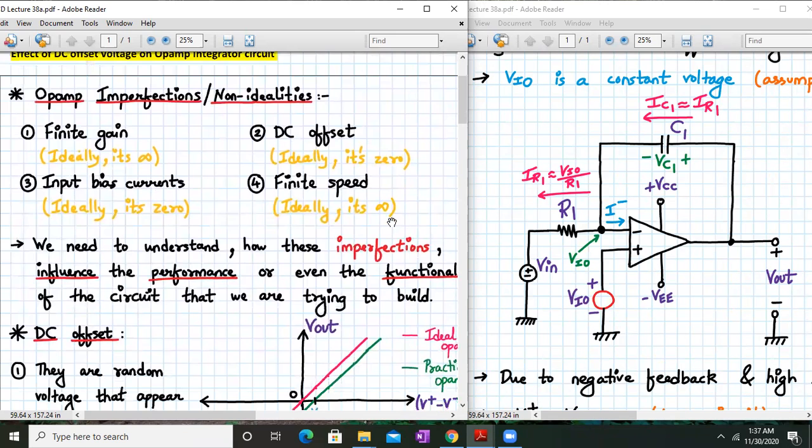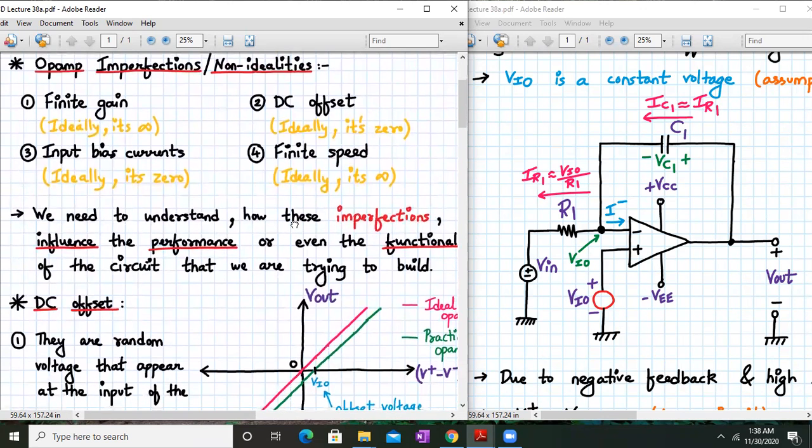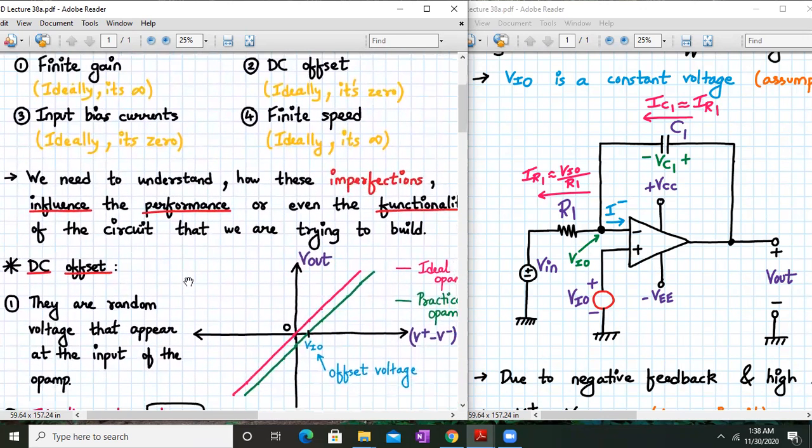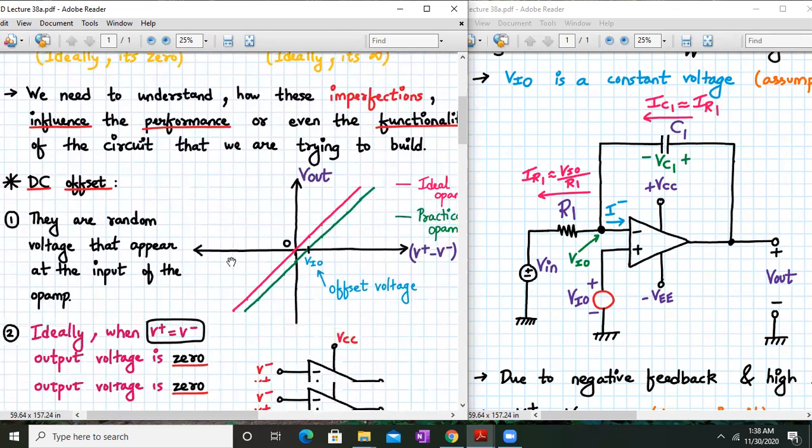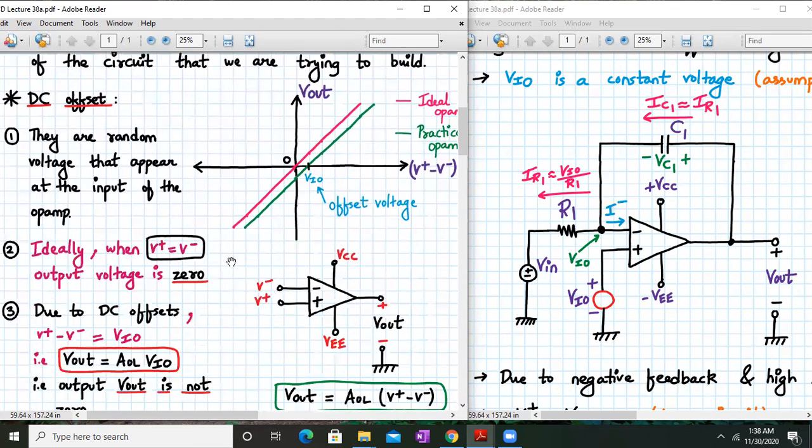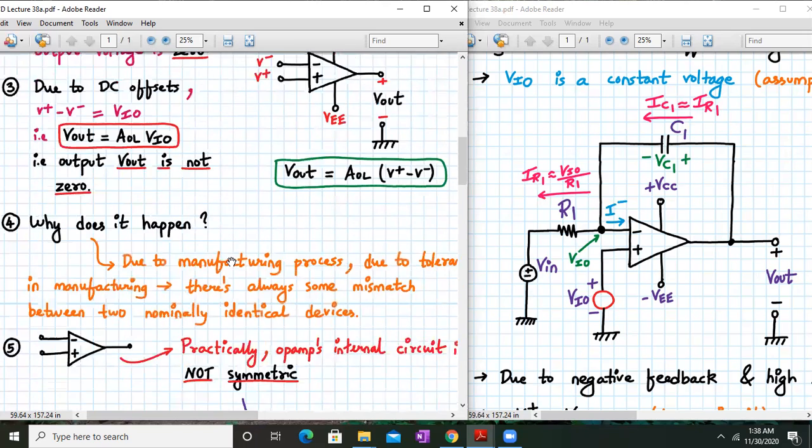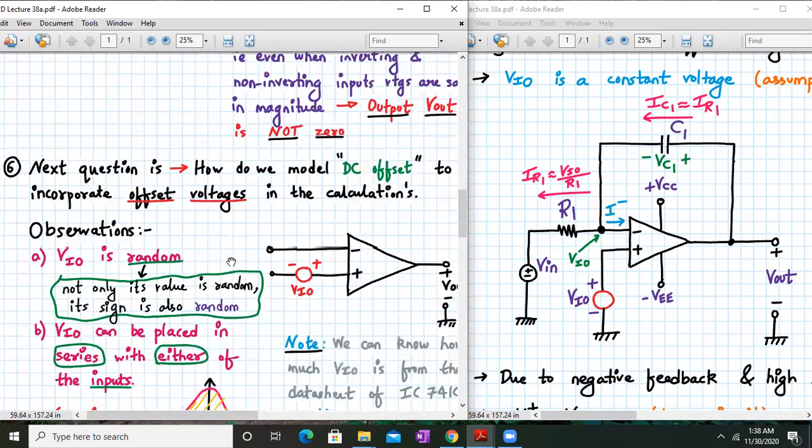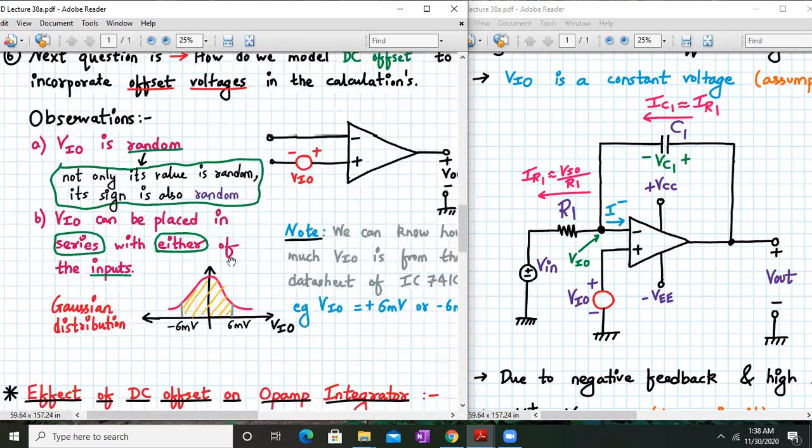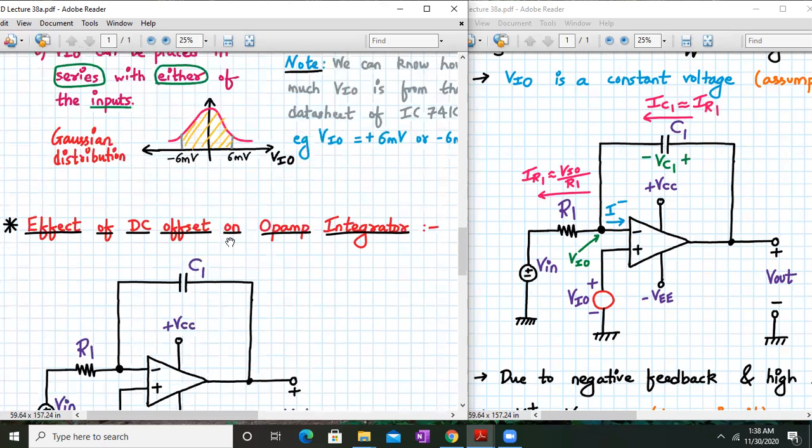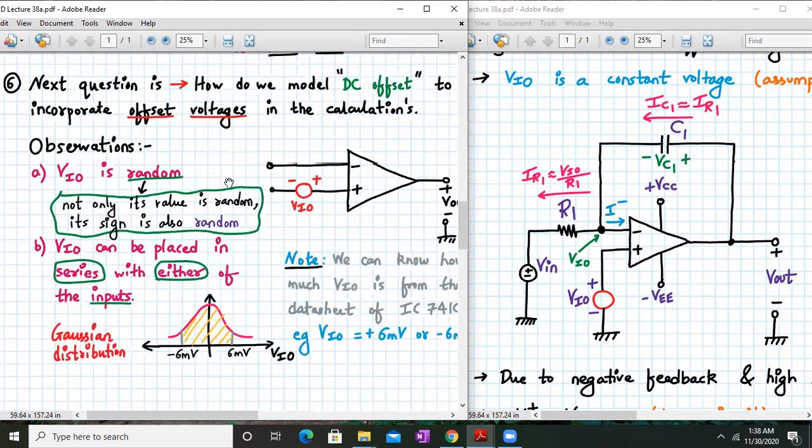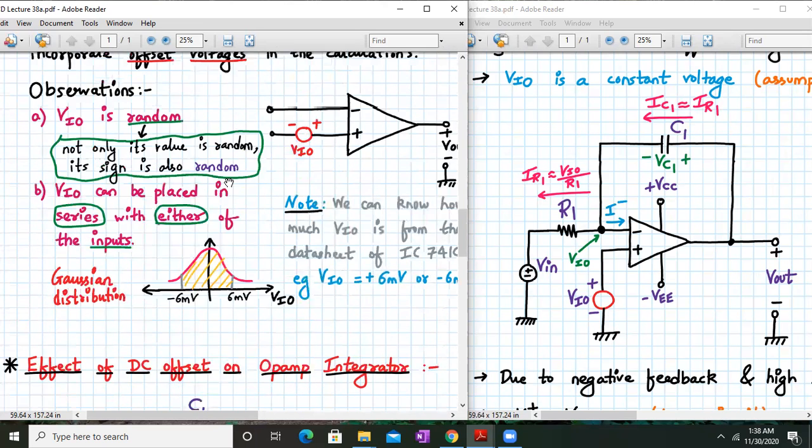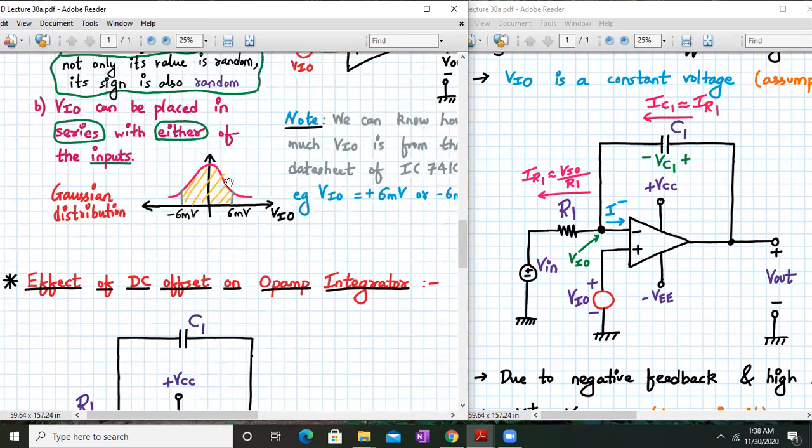Let's start with a revision of Op-Amp non-idealities. The first non-ideality was finite gain, next was DC offset, next input bias current and finite bandwidth. In the last online lecture, we explicitly went through the DC offset, its effects, its origin and its incorporation with the Op-Amp. We have seen about input offset voltage and its effects on the output. It produces a DC error at the output basically.